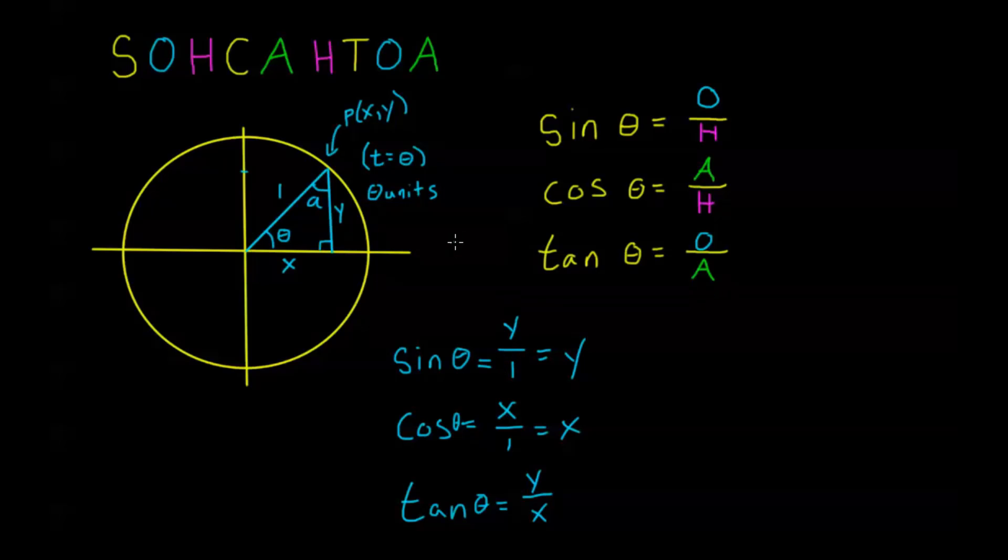Okay, now in the next video we're going to talk about some special triangles, and specifically these special triangles are going to help us with our common reference numbers or our common angle values when we can't think of what sine of pi over 6, for example, might be. We can use these special triangles to very quickly figure out, using SOHCAHTOA, what sine of pi over 6 or pi over 4 or pi over 3 is. And we'll see you there.